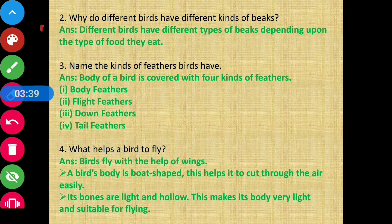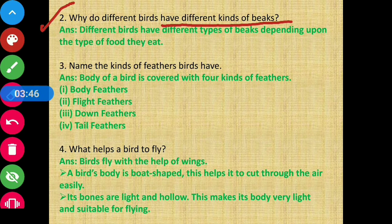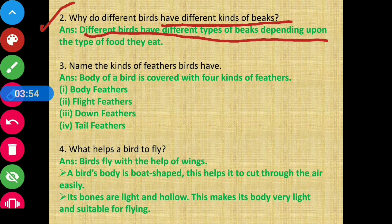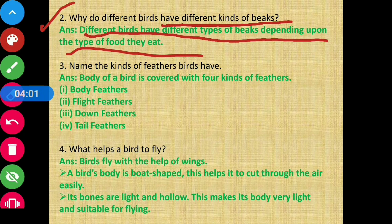Question 2: Why do different birds have different kinds of beaks? Answer: Different birds have different types of beaks depending upon the type of food they eat. So the kind of beak a bird has depends on what food it eats.